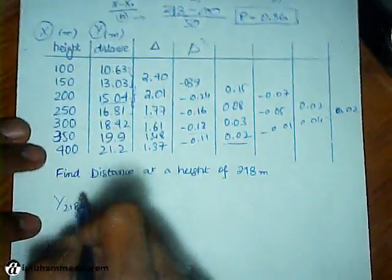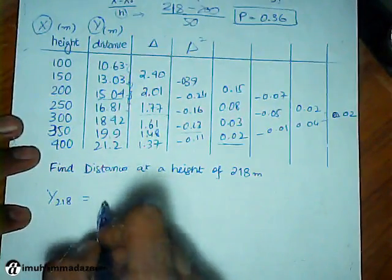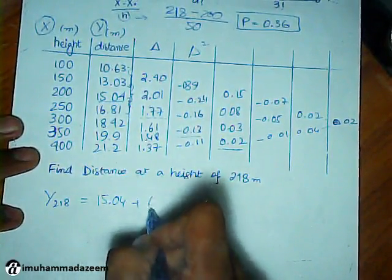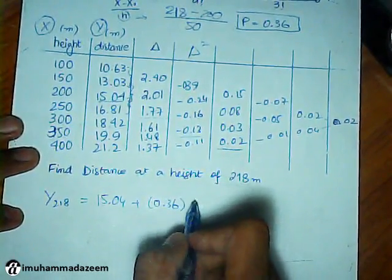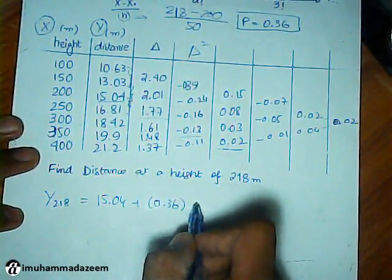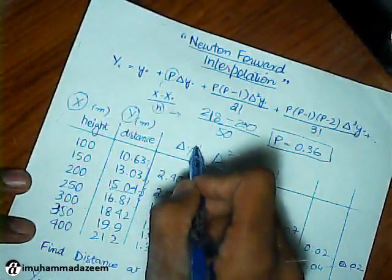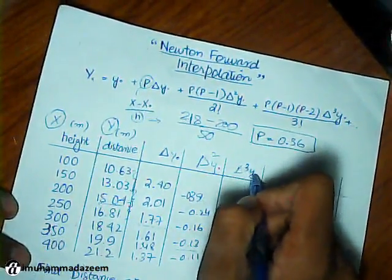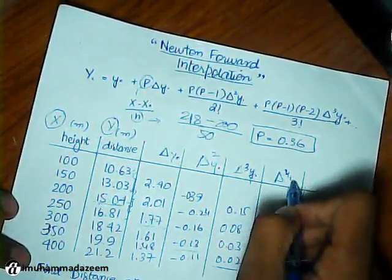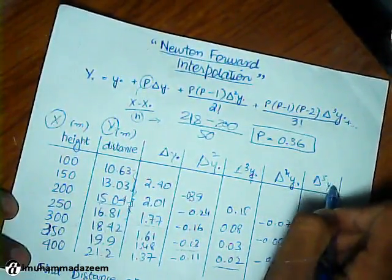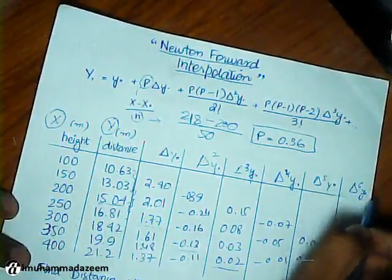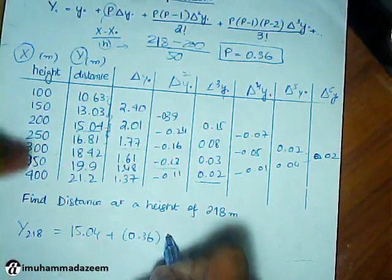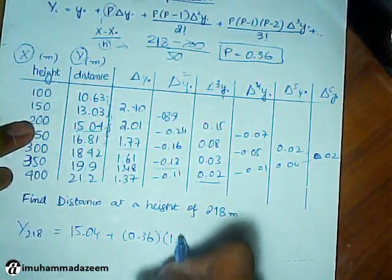Y of 218 is going to be Y naught, here is 15.04, plus P here is equals to 0.36. We have delta Y naught here. This is delta Y naught, delta square Y naught, and delta cube Y naught, and delta 4 Y naught, delta power 5 Y naught, and delta power 6 Y naught. Here, delta Y naught, what is the value? It's 1.77.